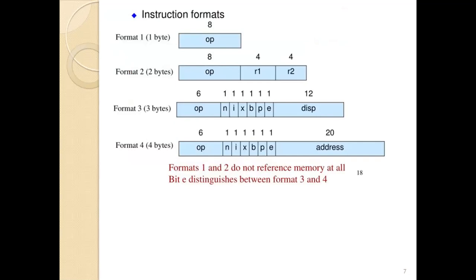Regarding instruction formats: standard SIC has only a 24-bit instruction format, but SIC/XE has four formats — format 1, format 2, format 3, and format 4. The larger memory means a 20-bit address no longer fits in the 15-bit field of standard SIC, so the instruction format had to change. Two solutions were adopted: using relative addressing and extending the address field to 20 bits. These led to the four new instruction formats.